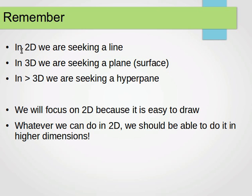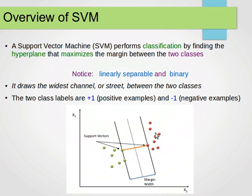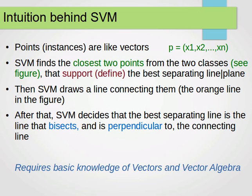In 2D we're seeking a line that separates the data; in 3D we're seeking a plane or surface; and if it's more than 3D then it becomes a hyperplane. I'll be using these three interchangeably. Whatever we can do in 2D we should be able to do in 3D or more dimensions — we just focus on two dimensions because it's easy to draw and visualize.